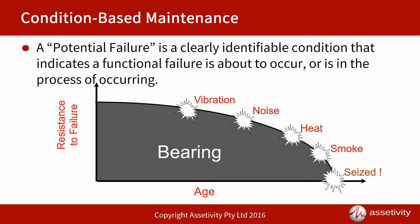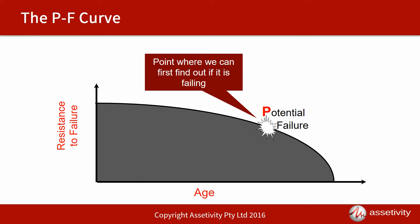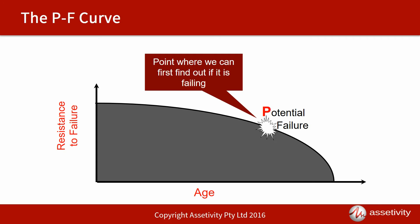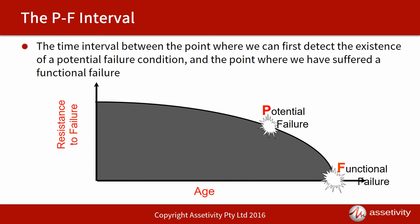Point P on the curve is the point at which we can first detect that the item — in this case the bearing — is about to fail, using a particular technique such as heat and the alarm level we've set, for example 65 degrees Celsius. Point F is the point at which we suffer the functional failure — the bearing has seized. The time interval between Point P and Point F is what we call the PF Interval.